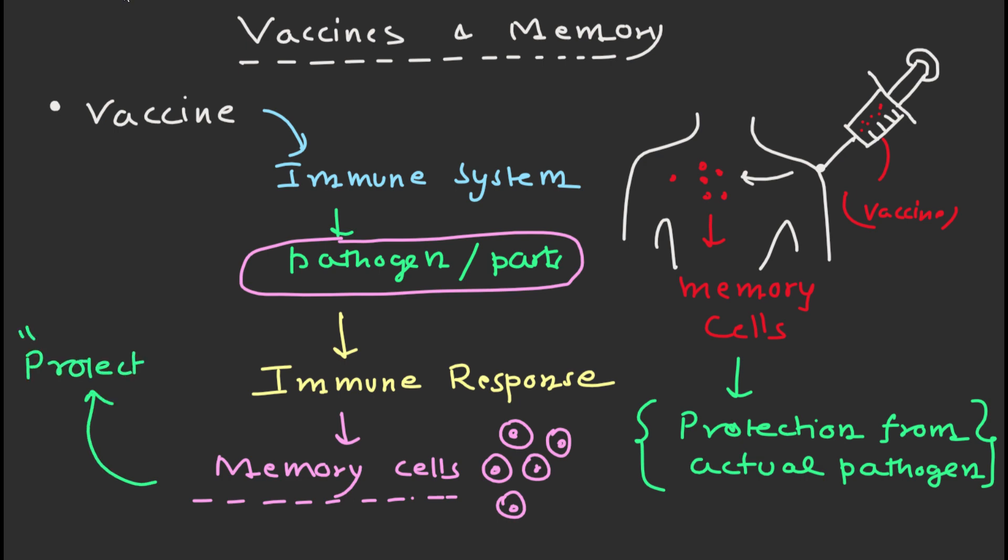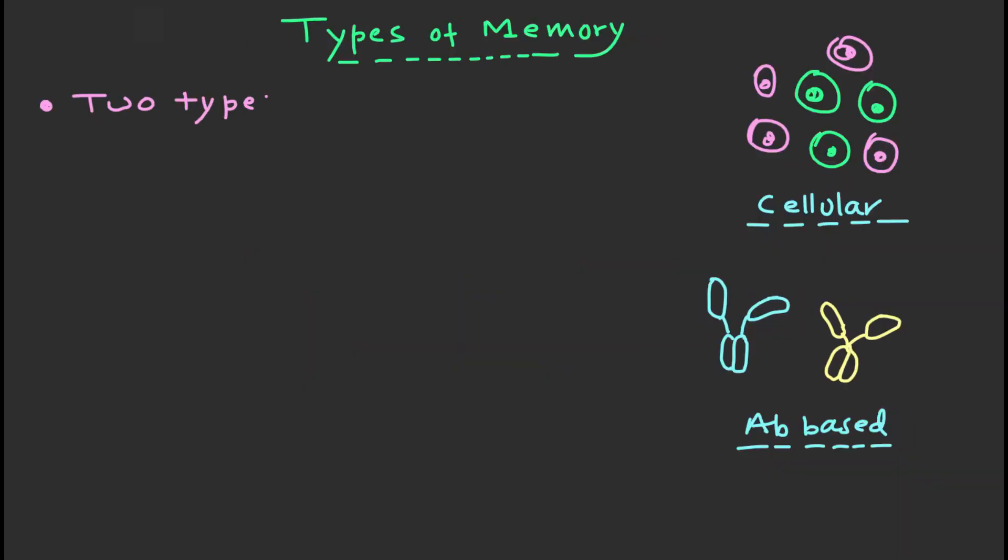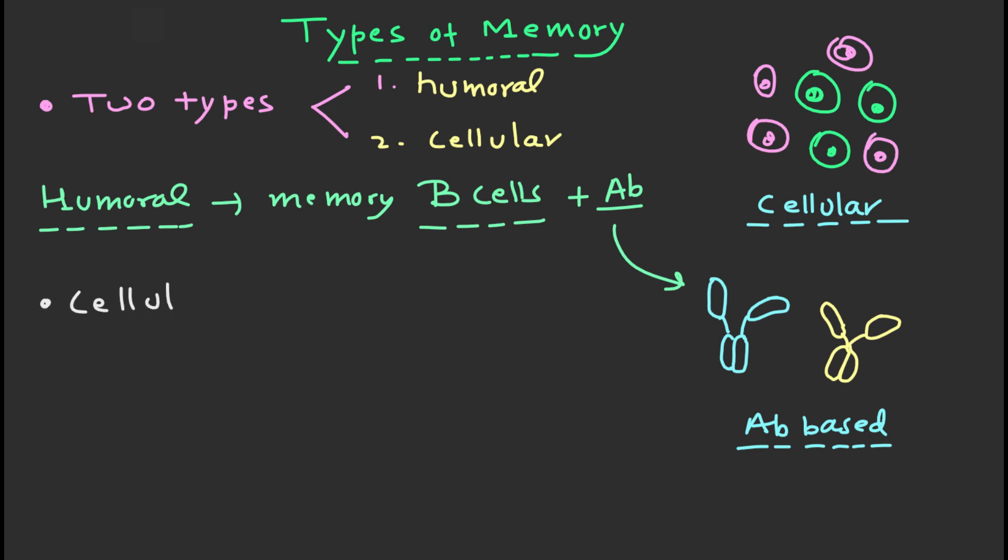There are two types of immunological memory: humoral and cellular. Humoral immunity is mediated by memory B cells and antibodies, while cellular memory is mediated by memory T cells. Both types of memory work together to produce effective protection against pathogens.